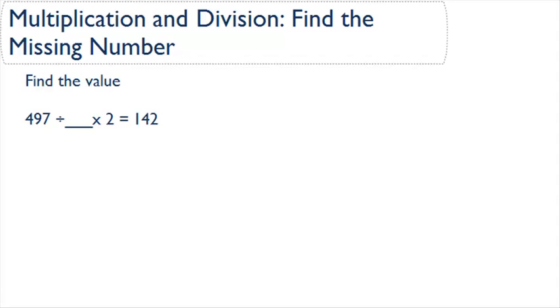Now let's talk about how to solve a problem where we are expected to find the missing number in a multiplication and division problem. Here the problem says 497 divided by some number times 2 will equal 142.